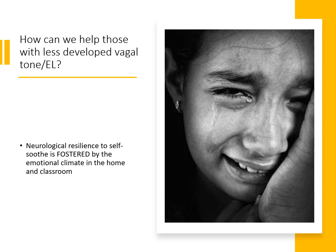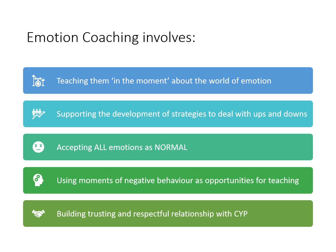This neurological resilience to self-soothe is fostered by the emotional climate in the home and the classroom — and as adults nurturing children and young people, we have the capacity to ensure that this takes place. Emotion coaching in the moment — teaching children about the world of emotion when they're distressed, getting angry or upset — supports them to develop strategies to deal with life's ups and downs, accepting all emotions as normal, not pathologising them, and seeing difficult moments as opportunities for teaching rather than punishment.